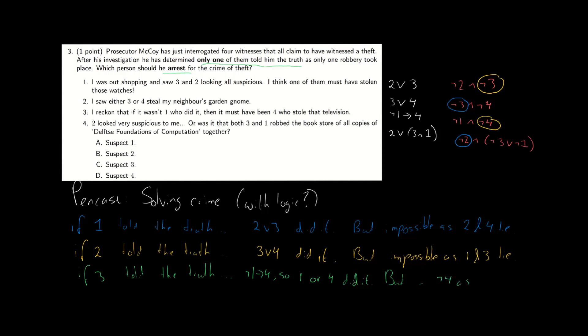But okay, four couldn't have done it because two lies. But yeah, one could have done it. This is consistent with the story of one. It is consistent with the story of two. And it's also consistent with the story of four when all of them lie. So we seem to be done. Three is telling the truth. And that means one has done it.